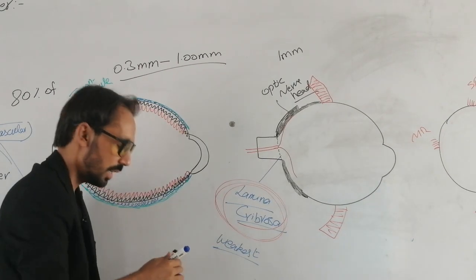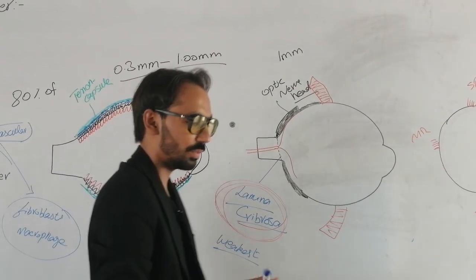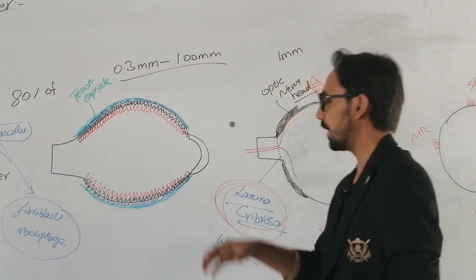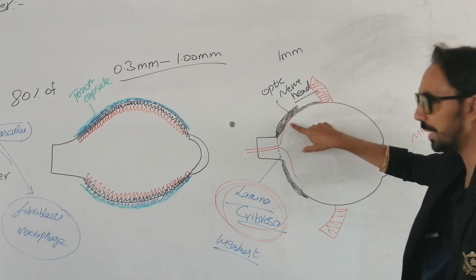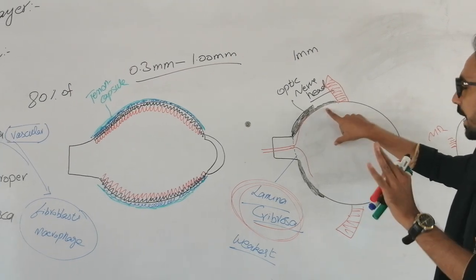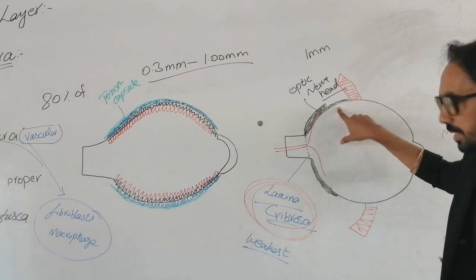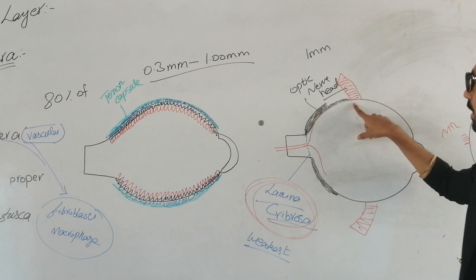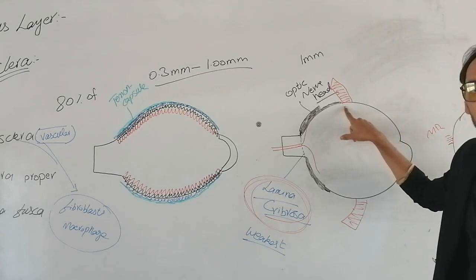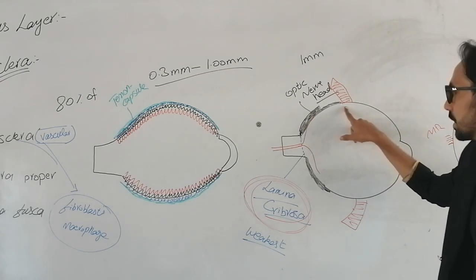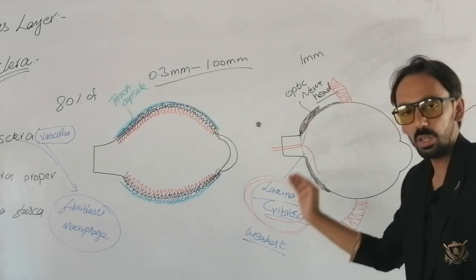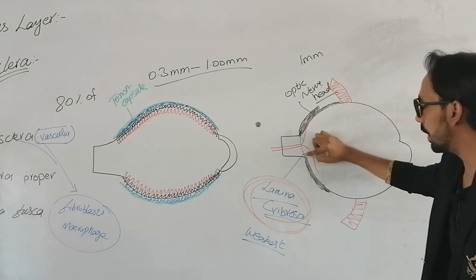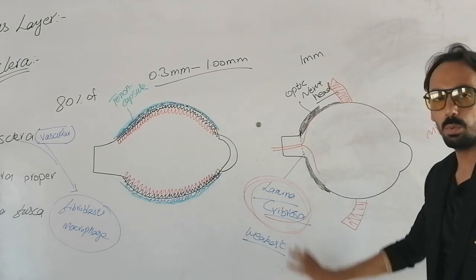So we have discussed the different levels of the thickness of the sclera. Our sclera is very thickest at the point of the optic nerve head. Our sclera is very thinnest at the point posterior to the insertion of the recti muscles. And our sclera is very very weakest at the point of the lamina cribrosa.